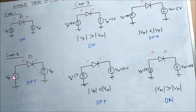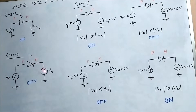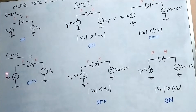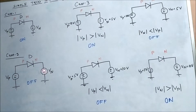The second case is the opposite of the first: P is connected to the negative voltage and N is connected to the positive voltage. In this type of circuit connection, the diode will always be off, regardless of the magnitude of VP and VN. If the diode is connected with P to negative and N to positive, it will always be off.